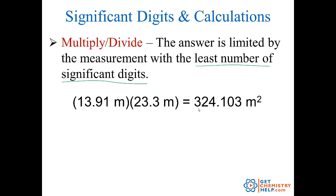That equals 324.103 meters squared. The precision of my answer is limited to whatever the least precise — or the least number of significant digits — were in the inputs. So 13.91 has four sig figs, and 23.3 is precise out to three sig figs.